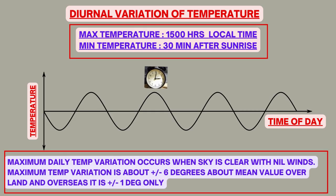Diurnal variation of temperature: Daily change recorded at a given place between maximum and minimum temperature over a 24-hour cycle is called diurnal variation of temperature. Maximum local temperature is recorded at 1500 hours in the afternoon, and minimum temperature is recorded half an hour after sunrise. Maximum daily temperature variation occurs when the sky is clear with nil or light winds. Maximum temperature variation is about plus or minus 6 degrees about the mean value over land, and over sea the diurnal variation is hardly plus or minus 1 degree about the mean value.